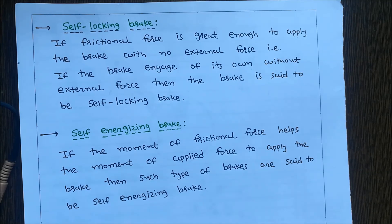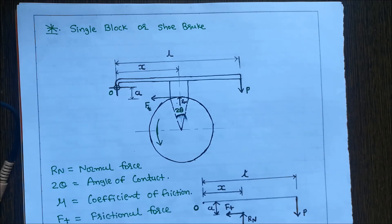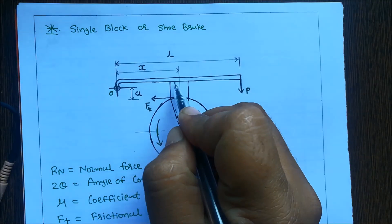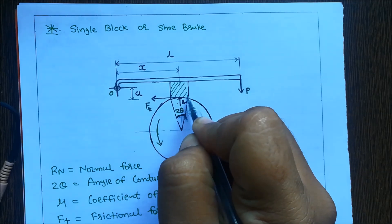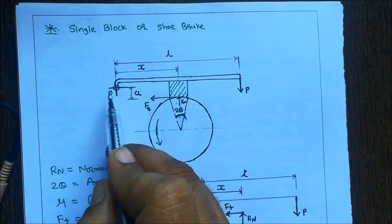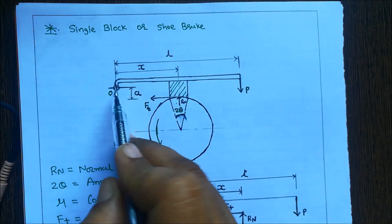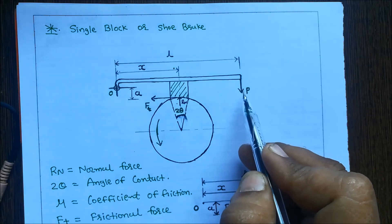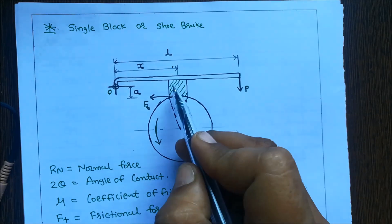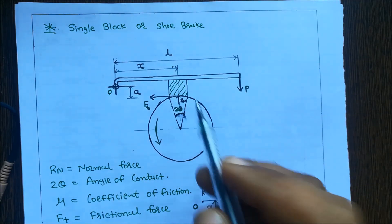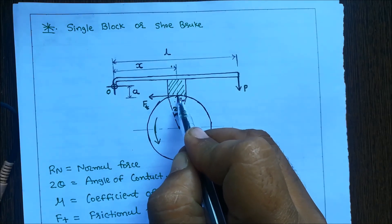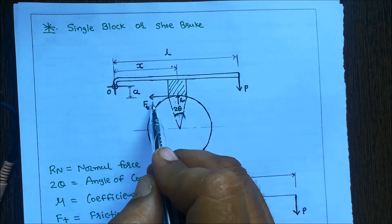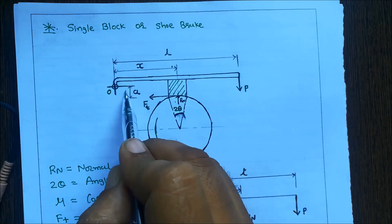To understand the concept of self-locking and self-energizing brakes, we consider a single block brake in which the brake drum is rotating in the anti-clockwise direction. Here there is a brake shoe or block. We have a fulcrum, and the distance between the fulcrum and the normal reaction is X. At the end of the lever we apply effort P. Because of this effort the block comes in contact with the rotating drum, so there is a normal reaction acting in the upward direction. Since the brake drum rotates anti-clockwise, the tangential force acts towards the left, and the distance between the fulcrum and this tangential force is A.